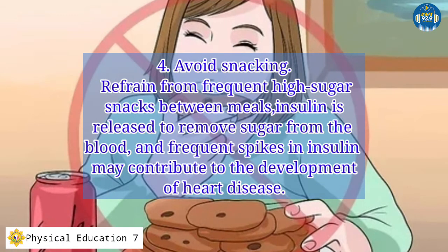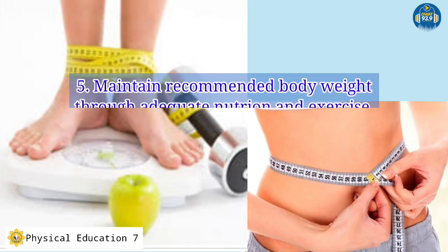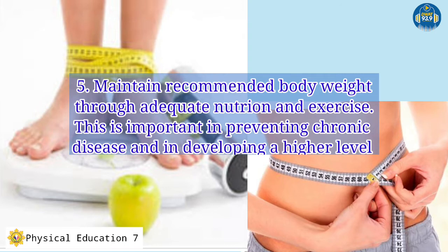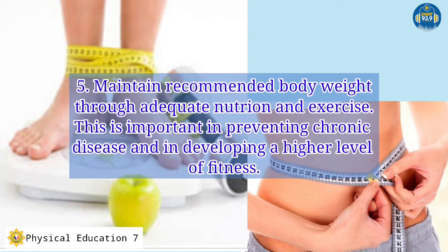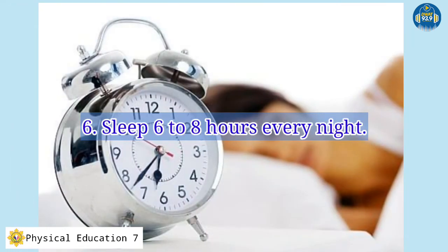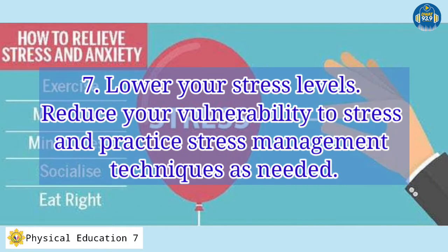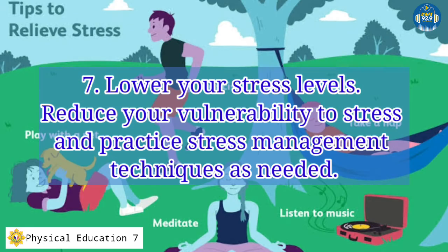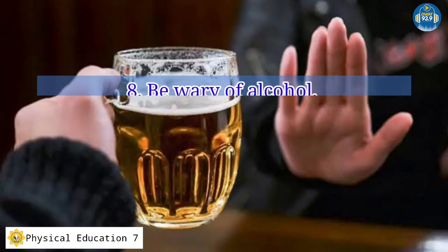Avoid snacking: refrain from frequent high-sugar snacks between meals. Insulin is released to remove sugar from the blood, and frequent spikes in insulin may contribute to the development of heart disease. Maintain recommended body weight through adequate nutrition and exercise — this is important in preventing chronic diseases and developing a high level of fitness. Sleep 6 to 8 hours every night. Lower your stress levels and practice stress management techniques as needed.